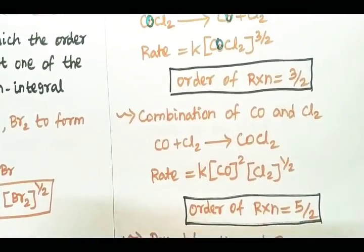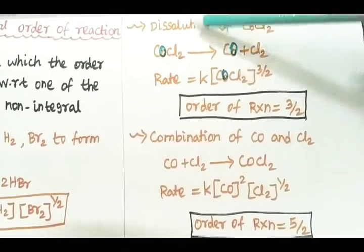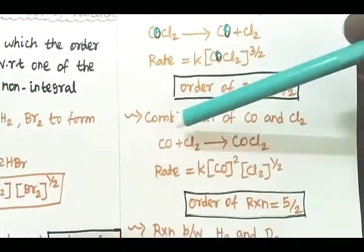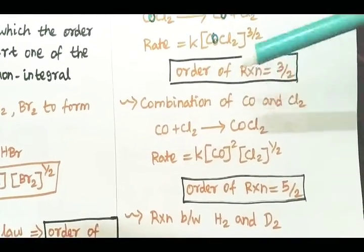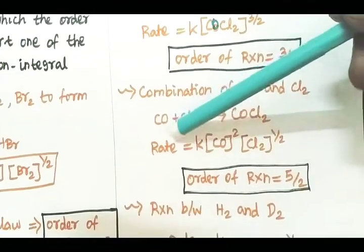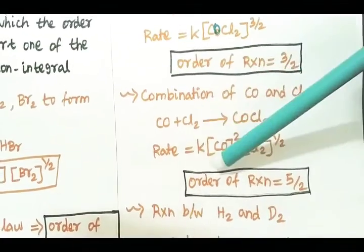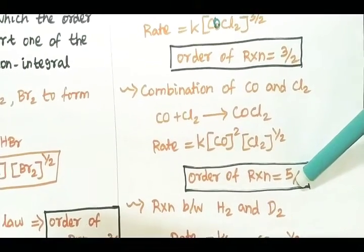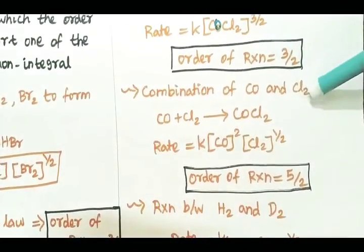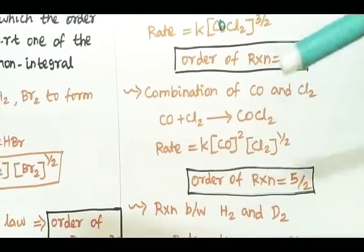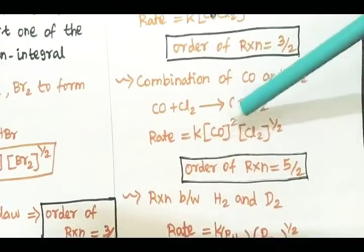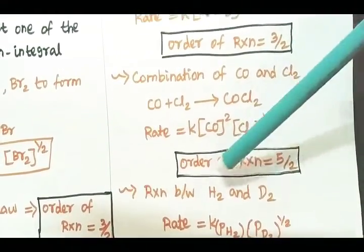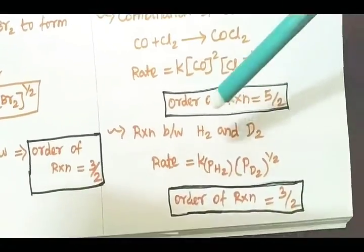For the combination of carbon monoxide and chlorine, the order of reaction is 5/2. With respect to carbon monoxide, the order is 2; with respect to chlorine, the order is 1/2. So the overall order of reaction is 2 plus 1/2, which equals 5/2. This is another example of a fractional order reaction.